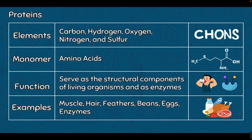The next biomolecule is proteins. Proteins have more elements: they are made up of carbon, hydrogen, and oxygen, but also nitrogen and sulfur — the first biomolecule where we see nitrogen and sulfur as components. The monomer of proteins are amino acids. The amine group is where the nitrogen is found. We can put long chains of amino acids together to form several different types of proteins that make up living structures.